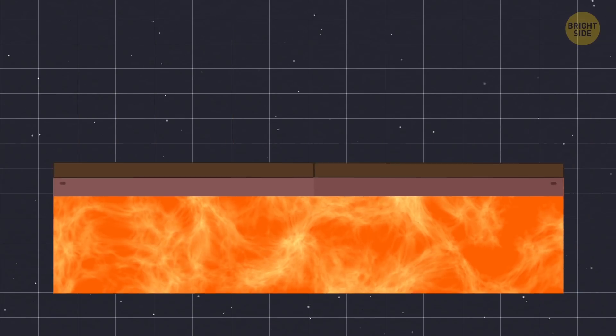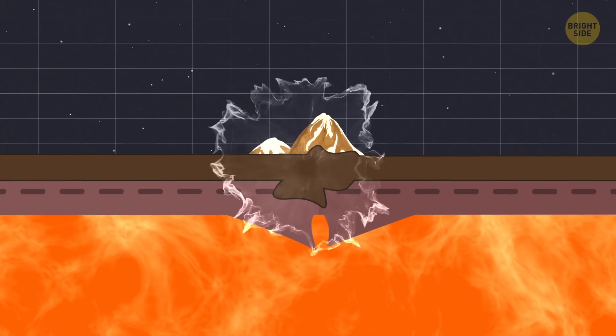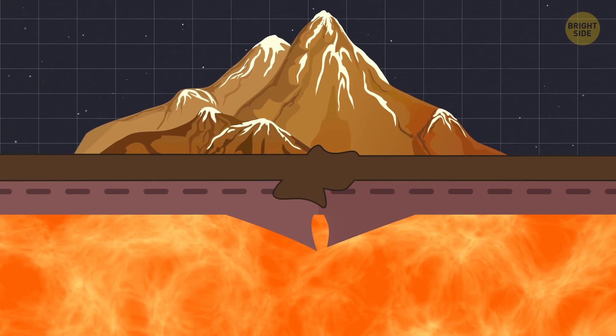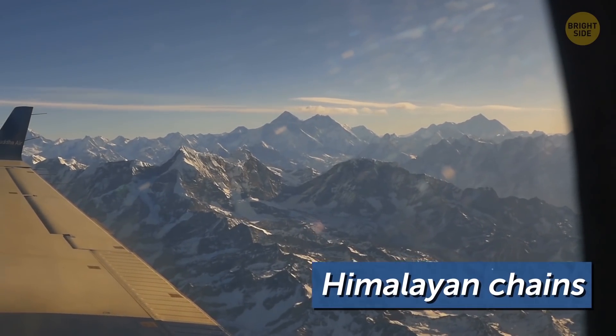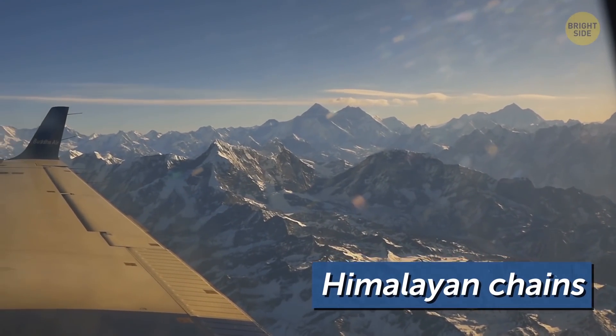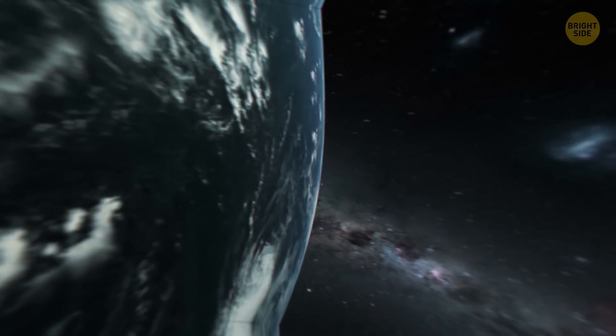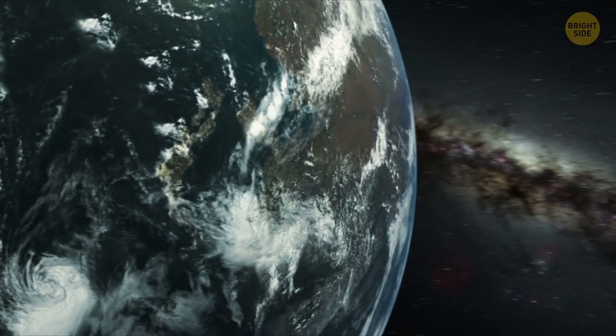Sometimes there could be a collision between two continents, so the plates crash together without a subduction zone forming. That's exactly what happened when India slammed into Asia millions of years ago, and the Himalayan chains formed.